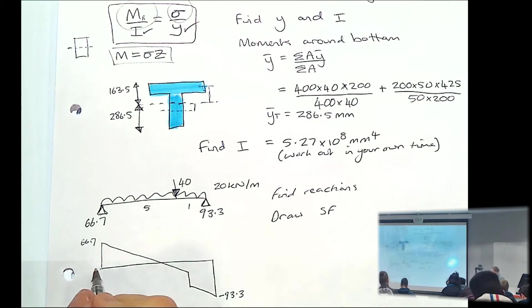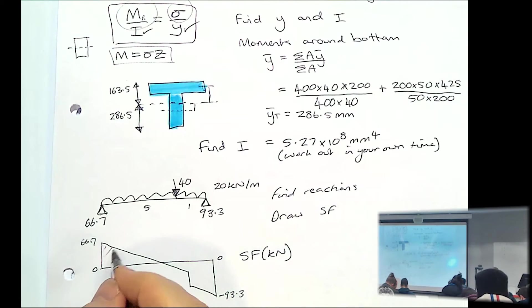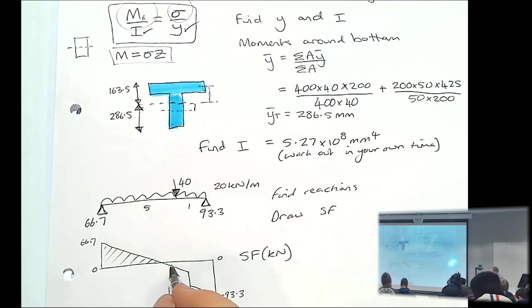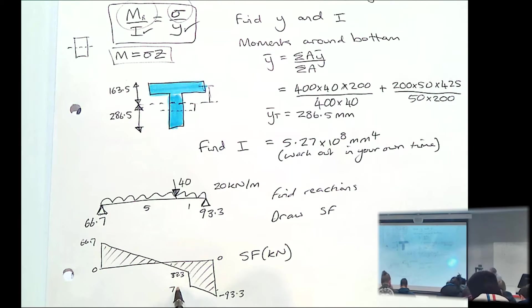So you should end up with a shear force diagram looking like this. That drops down to 33.3. That's 70 plus 40, 73.3.